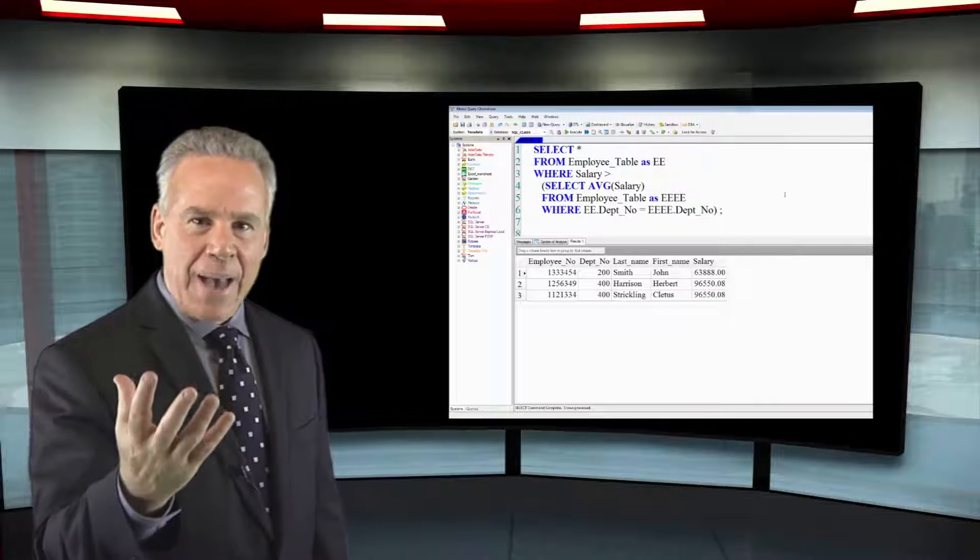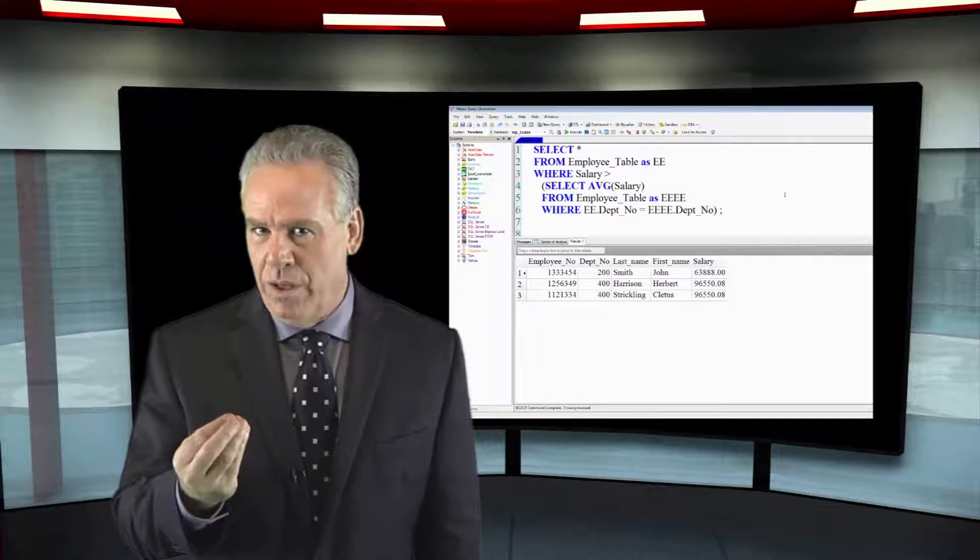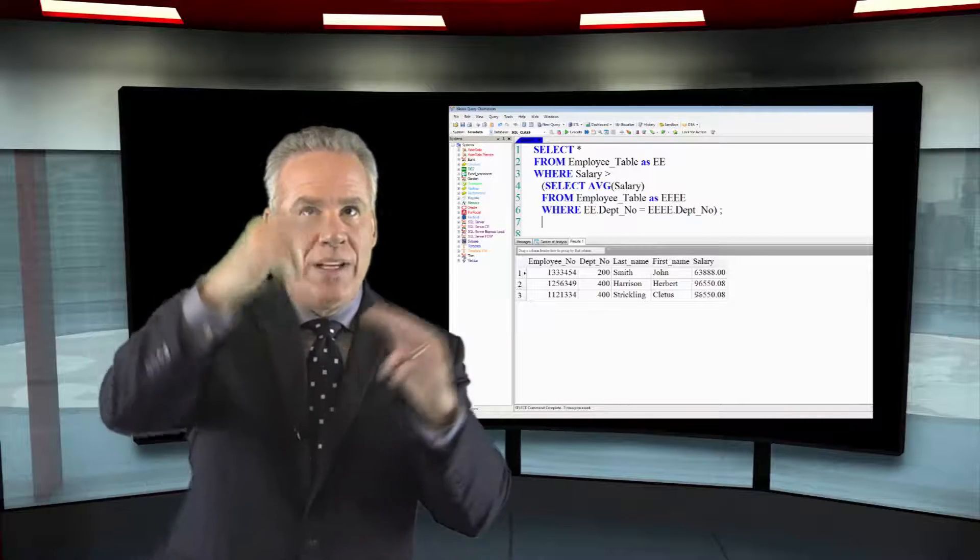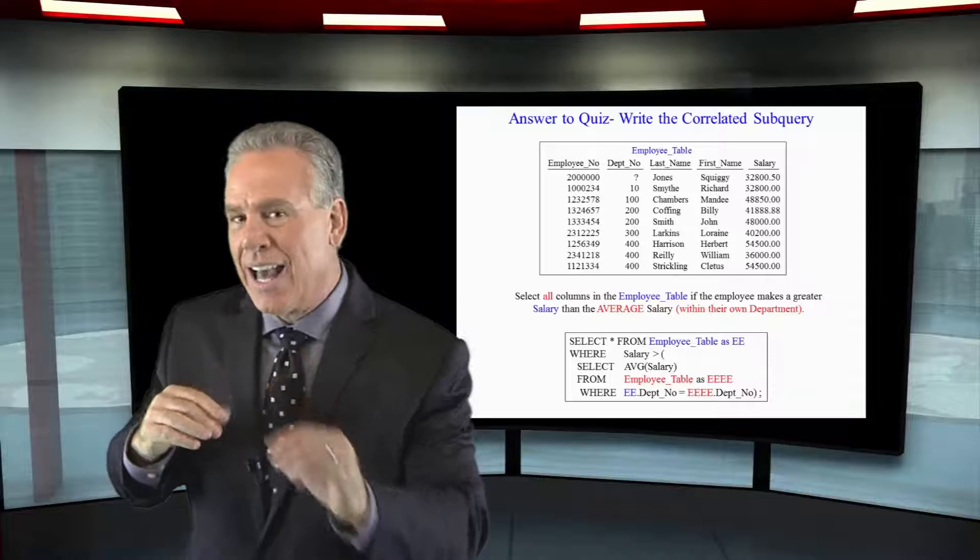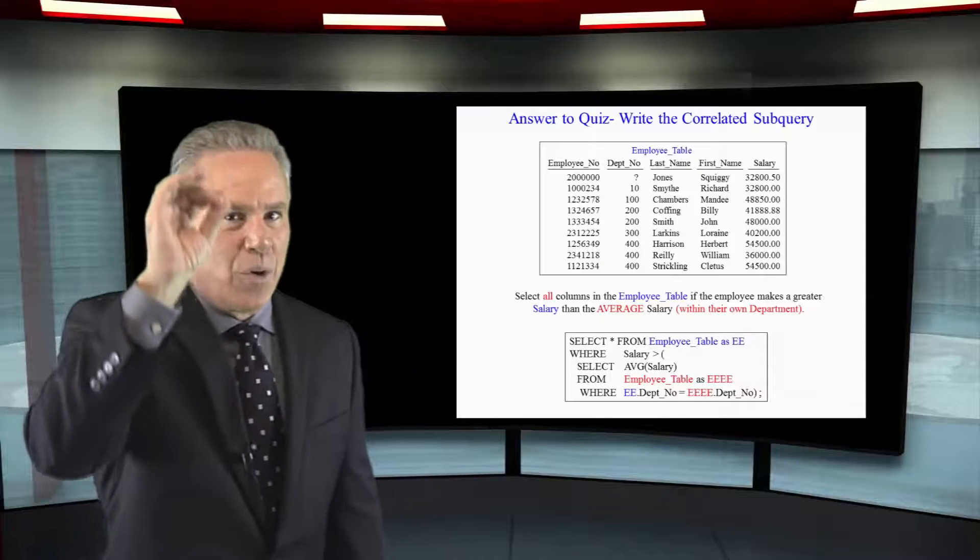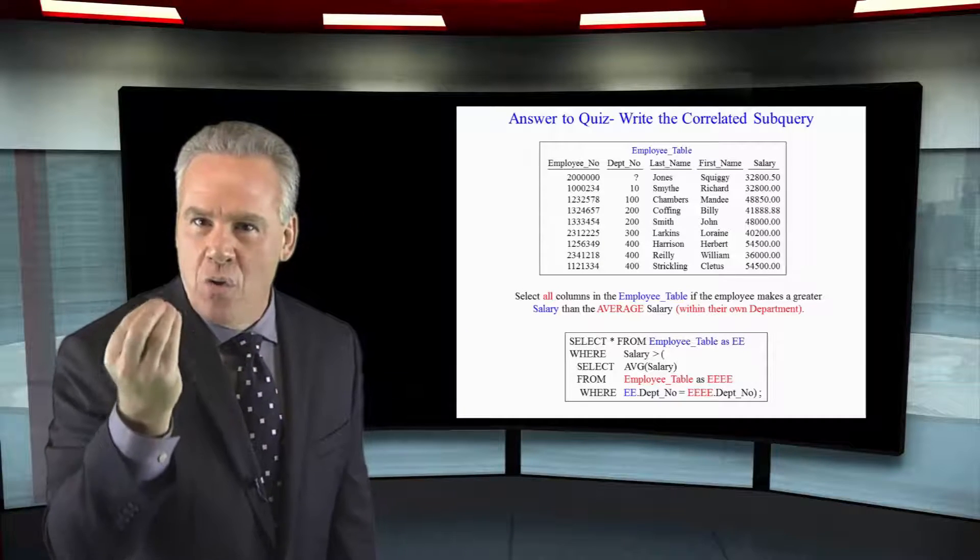And this is absolutely going to build the result set co-related from EE.depno equals EEE.depno from the top query and the bottom query, they're now co-related.